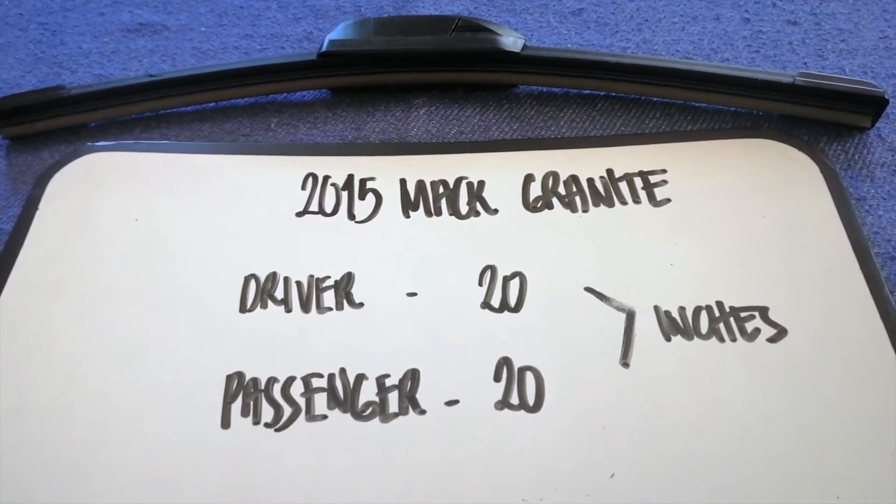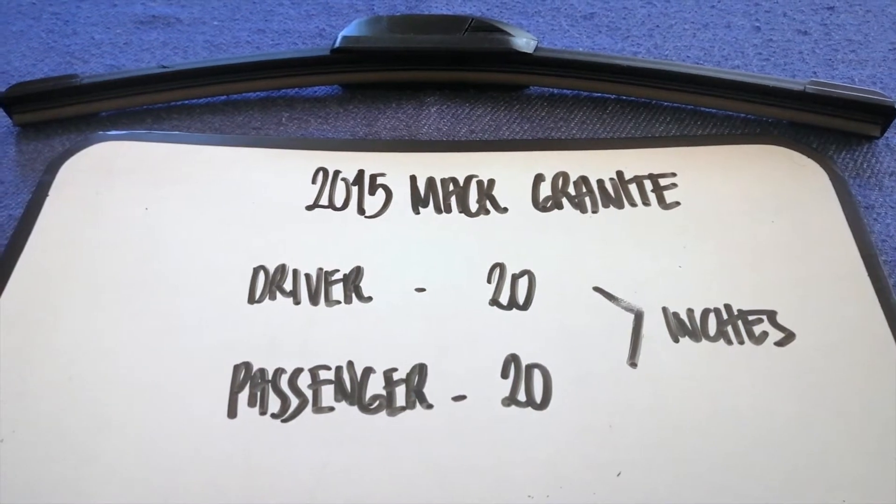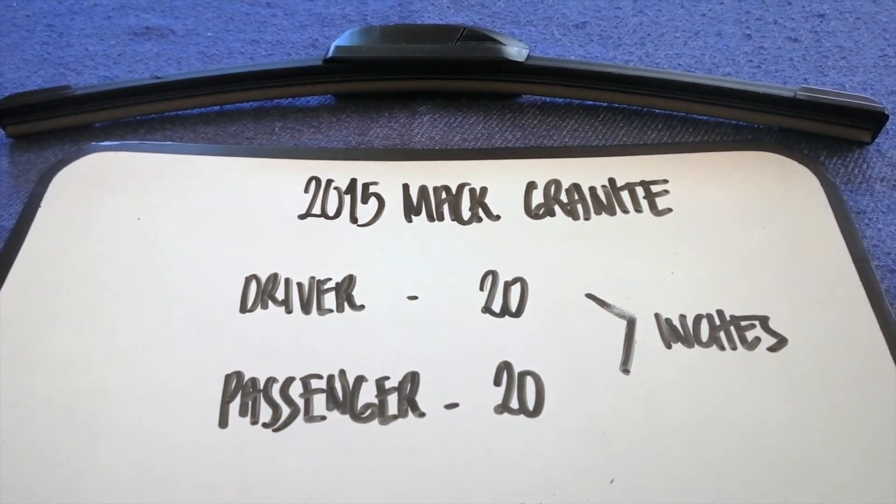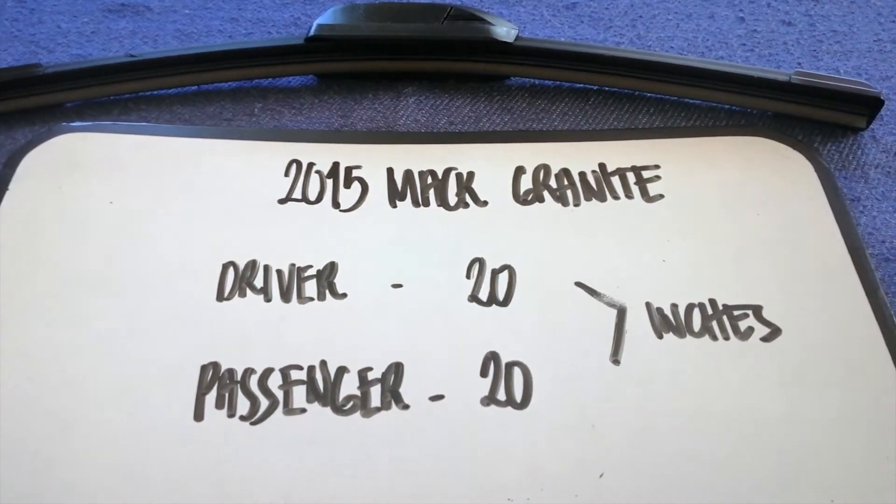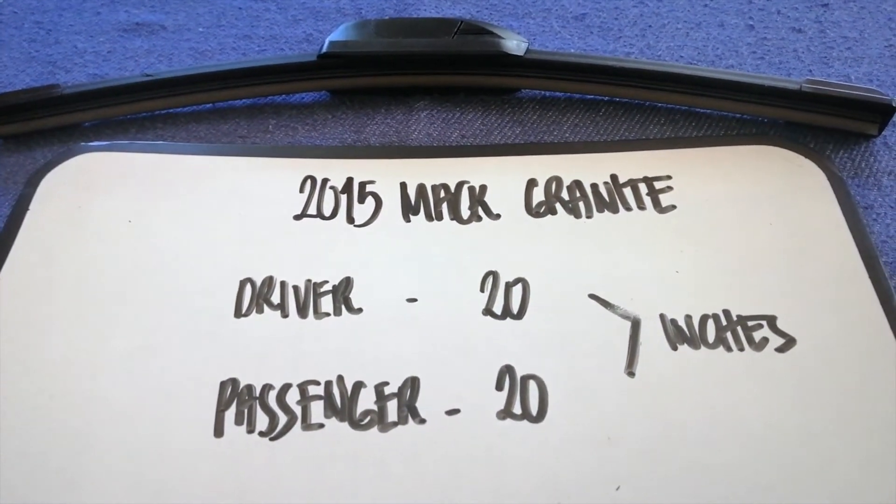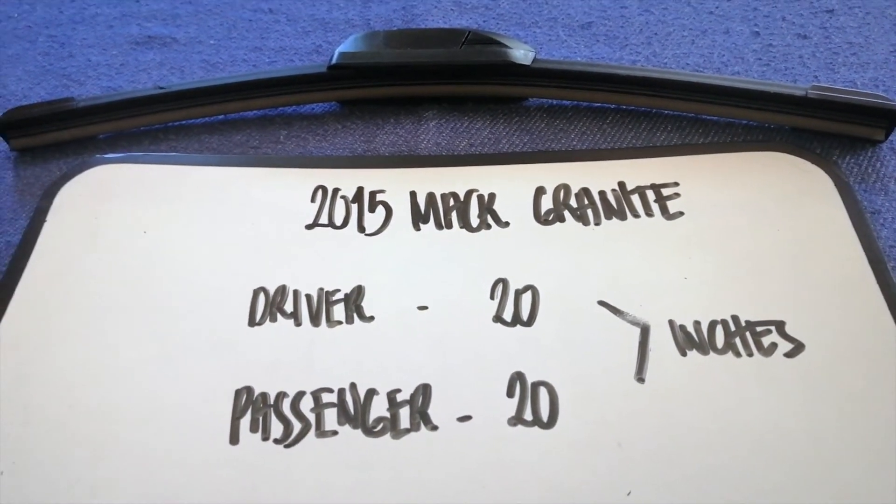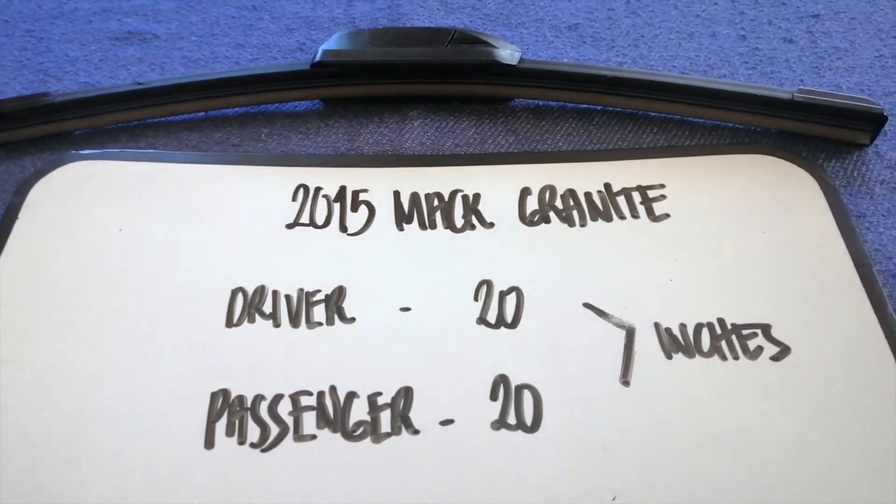So once again, the wiper blade replacement size for the 2015 Mack Granite is 20 inches for the driver and 20 inches for the passenger. And if your 2015 Mack Granite needs a different size, or if you know a cheaper place to buy a wiper blade replacement for the 2015 Mack Granite, just leave a comment and let the rest of us know.